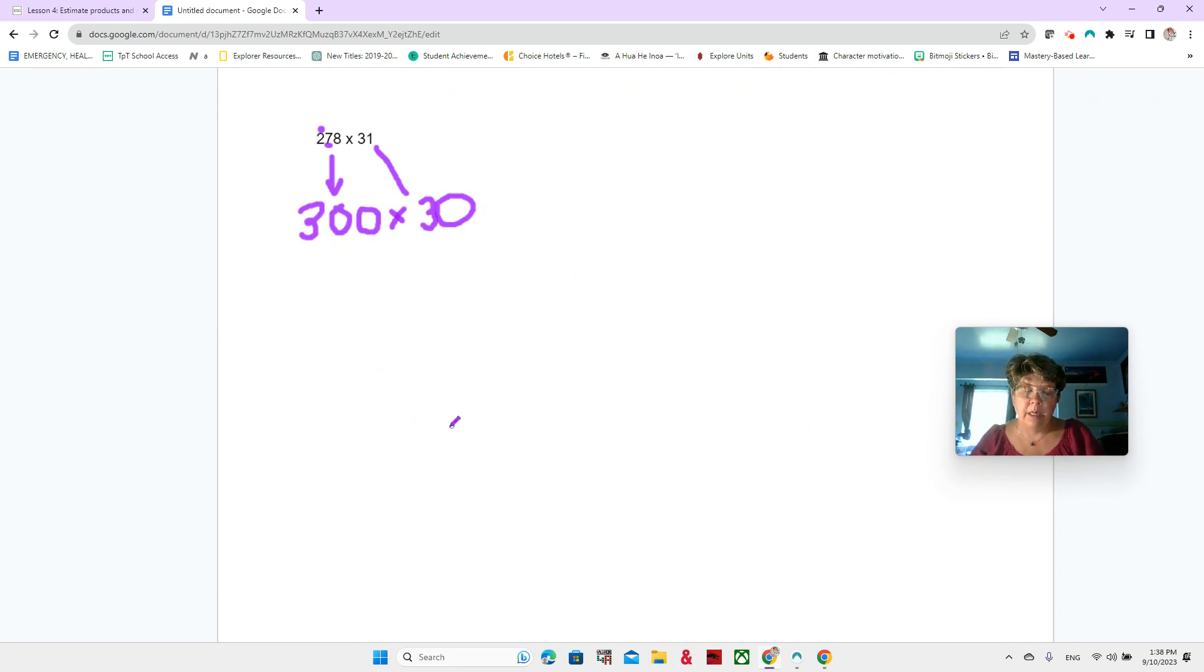Now I know some of you did a lot of estimating work before and you want to know, am I rounding to the nearest 10? Am I rounding to the nearest hundred? We're rounding to what is necessary to help us estimate. So we could do 300 times three. So we have three times three and that is nine. And then we have three zeros. You see our three zeros. So that's 9,000.